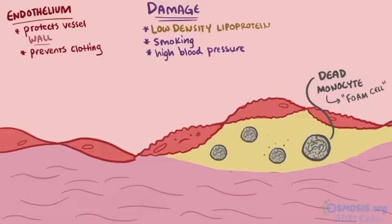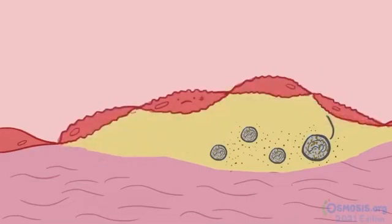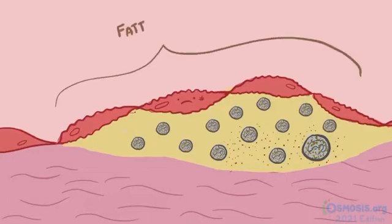When the macrophage dies, it releases cytokines, which calls over more monocytes that come over and eat more low density lipoprotein, inevitably dying while doing so. This vicious cycle of gross overeating and massive fatalities has begun. As more and more of these foam cells build up, they form a lesion we call a fatty streak.